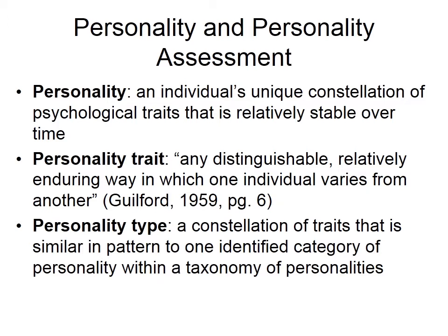Personality types refer to a constellation of traits that is similar in pattern to one identified category of personalities within a taxonomy of personalities — a taxonomy just means a kind of structure. For instance, when we talk about Type A versus Type B personalities, that's a constellation of traits. A Type A personality is probably very high on conscientiousness, also high on a need to achieve, and probably a little neurotic. So that's a constellation of traits that results in a personality type.